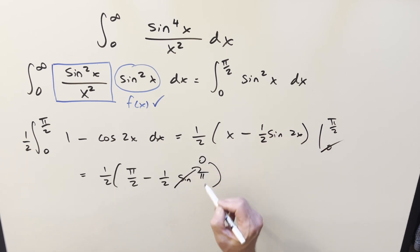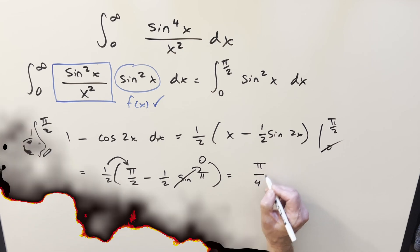But sine of pi, that's just zero. So then all we need to do, just distribute that in right there. For my final solution of this, we just get pi over four.